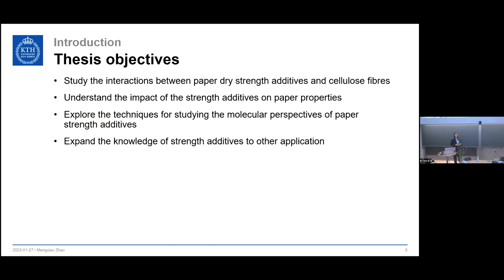The thesis objectives are: first, to study the fundamental interactions between paper dry strength additives and the cellulose fibers; second, to understand how strength additives affect paper performance, such as mechanical properties, density, and other properties; third, to investigate techniques that can be used to study the molecular interactions between cellulose fibers and strength additives; and finally, to apply the knowledge from dry strength additives in other applications.